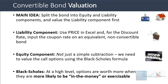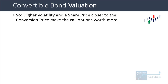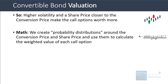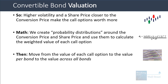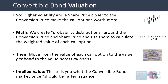The Black-Scholes formula derivation gets quite complicated, but at a high level, options are worth more when they're more likely to be in the money. Higher volatility and a share price closer to the conversion price make call options worth more. Based on these ideas, we use formulas to create probability distributions around the conversion price and share price to figure out the weighted value of each call option. One of the key terms is D1, which involves the natural log and other inputs. Once we have that, we move from the value of each call option to the value per bond to the value across all bonds, and ultimately get to the implied market value of the convertible bond after issuance.